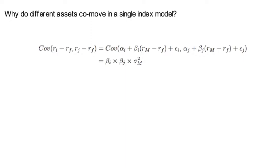Now you ask yourself which terms are co-moving with each other. Alpha is a constant, doesn't co-move. Epsilon i, epsilon j is orthogonal to each other and orthogonal to the market. So the only terms that co-move here are beta i times (rm minus rf) and beta j times (rm minus rf). So that covariance boils down to beta i times beta j times the variance of the market.